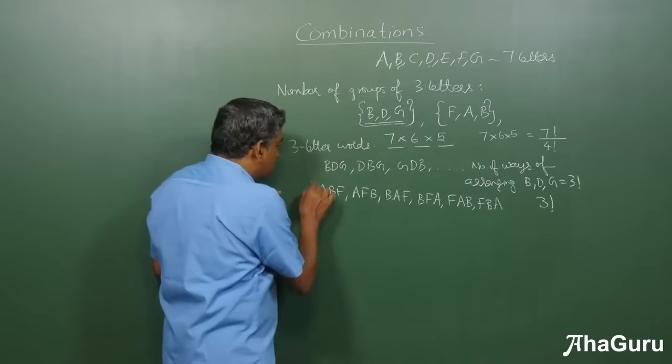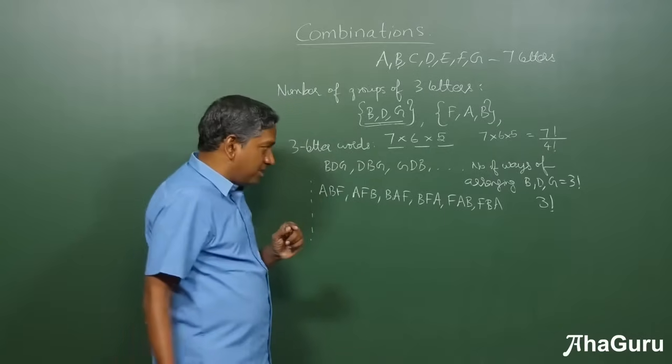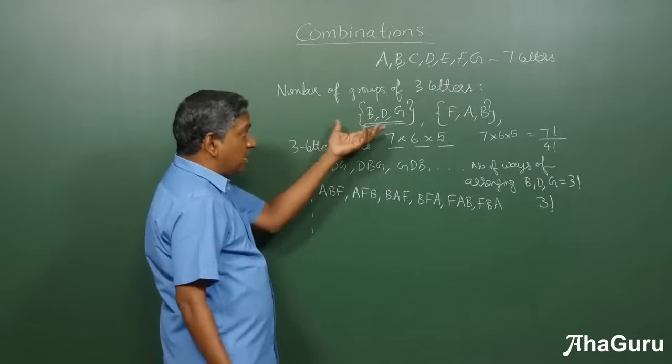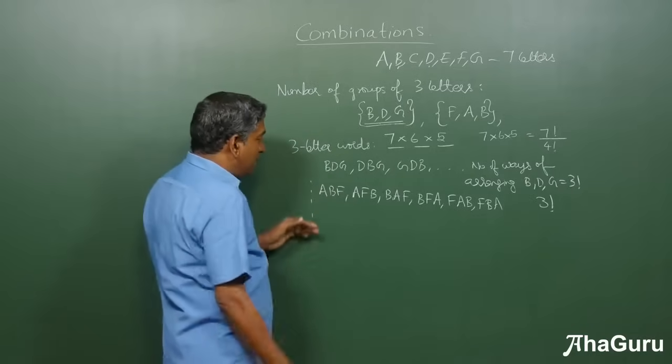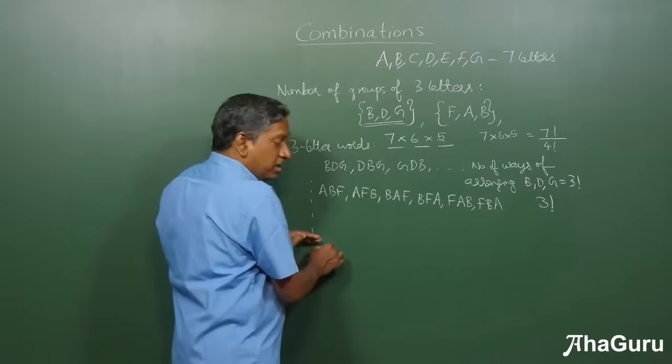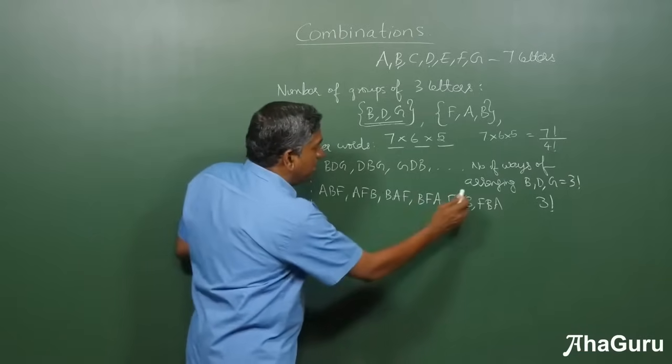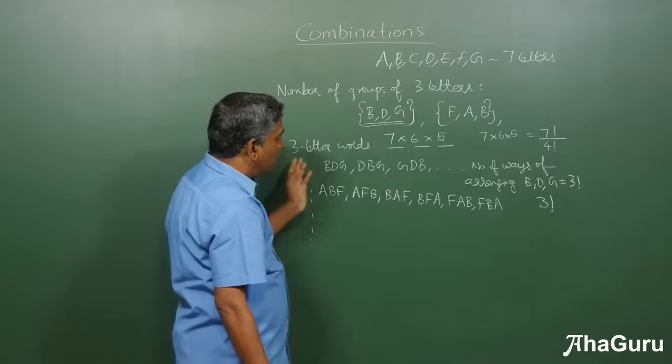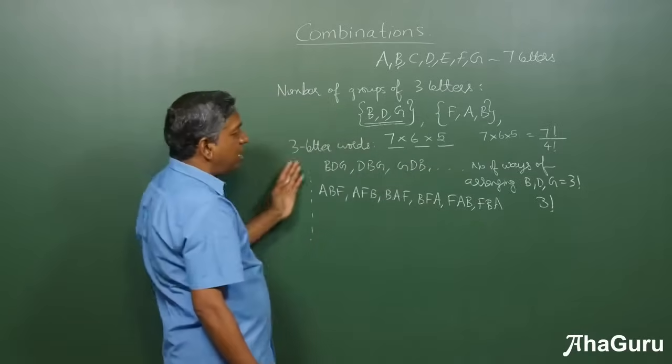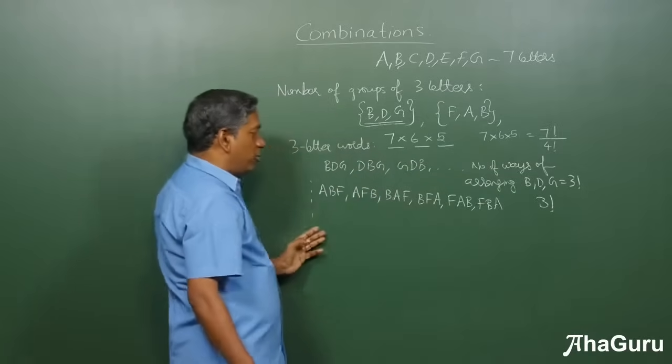Now, the question is, how many such groups are there? That is our question. Well, we don't know that. That's our goal. But suppose we say, whatever be that number, if you multiply that by 3 factorial, you must get the total number of words, because this full array will contain all the possible words.